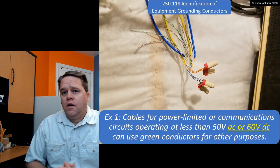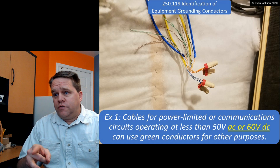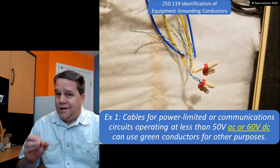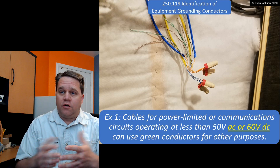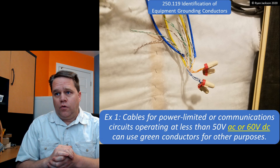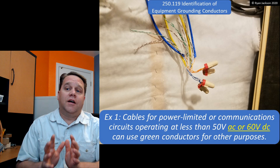Chapter 8 covers communications, including telephone wiring. A telephone might operate at greater than 50 or 60 volts while ringing — does that mean we can't use green conductors for telephone wiring? The answer is no, because telephone wiring is regulated by Article 800, or Article 805 in the 2020 code, and therefore doesn't have to comply with this rule. This exception is really talking about signaling circuits or power-limited circuits like Power over Ethernet.